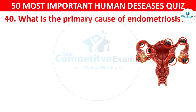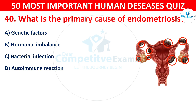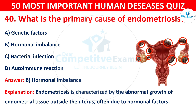Question 40: What is the primary cause of endometriosis? Your options are: A) Genetic factors, B) Hormonal imbalance, C) Bacterial infection, or D) Autoimmune reactions. The correct answer is B — hormonal imbalance. Endometriosis is characterized by the abnormal growth of endometrial tissue outside the uterus, often due to hormonal factors.